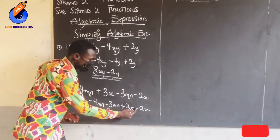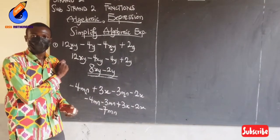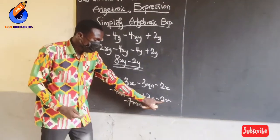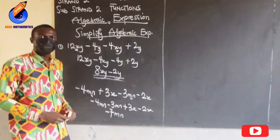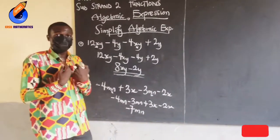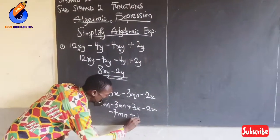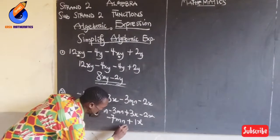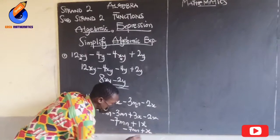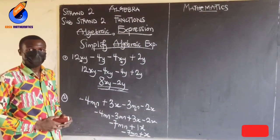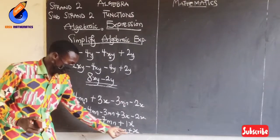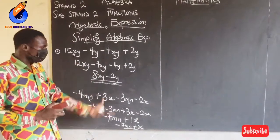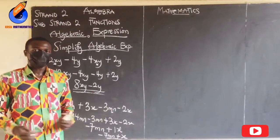For 3x minus 2x: the plus in front of the 3 tells you the 3 is yours, but the negative in front of the 2 tells you that you owe 2. So if I have 3 and I pay the 2, I am left with 1, and that 1 is for me — giving me plus 1x, but we write it as just x. So the final answer is x minus 7mn.